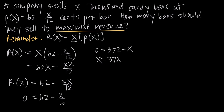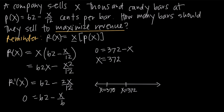A critical point is a point potentially where the function changes direction from increasing to decreasing or vice versa. This is the only critical point we found, so it's likely the value that maximizes revenue, but we need to verify it. We plot x equals 372 on a number line and test the derivative function on both sides, picking values like x equals 370 and x equals 374. This is called the first derivative test.